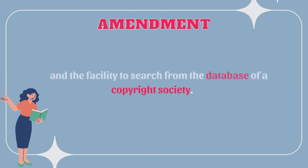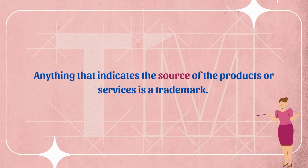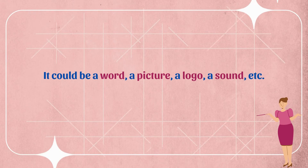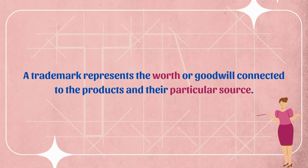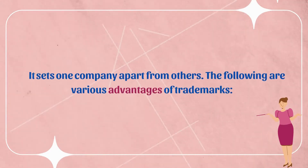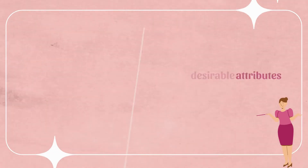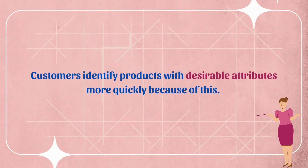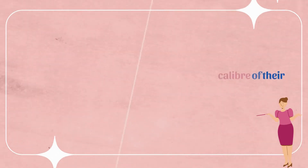Trademark: anything that indicates the source of a product or service is a trademark. It could be a word, a picture, a logo, a sound, etc. A trademark represents the worth or goodwill connected to the products and their particular source, and it sets one company apart from others. The following are various advantages of trademarks: customers identify products with desirable attributes more quickly.